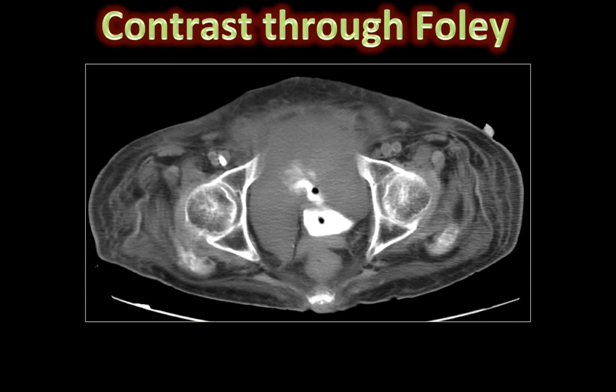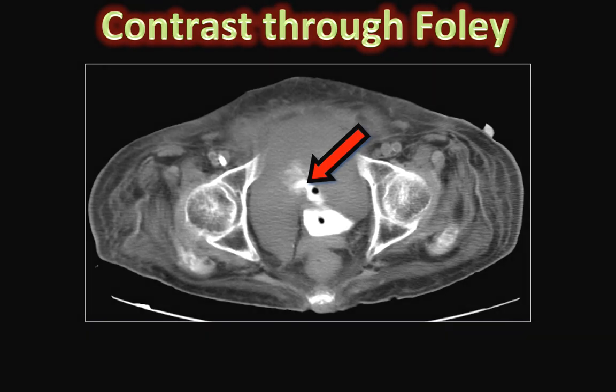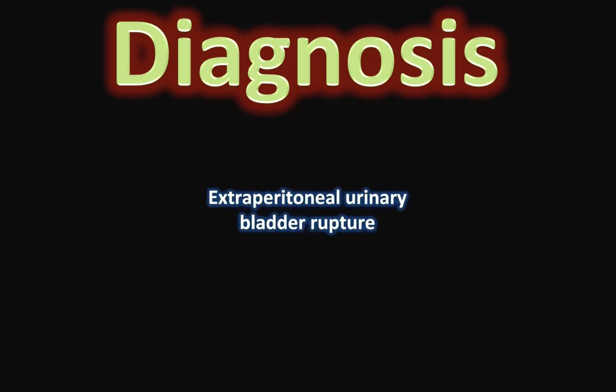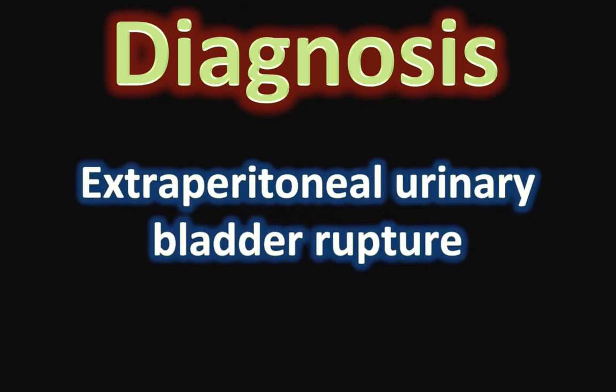This is another image where contrast was injected through the Foley catheter, clearly showing that there is contrast extravasation from the collapsed urinary bladder into the fluid collection within the pre-vesicle space. An appearance that is consistent with extraperitoneal urinary bladder rupture.